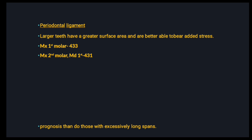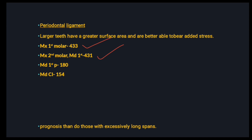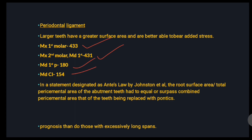You need to know the root surface area of certain teeth. The highest is for the maxillary first molar at 433 mm², followed by the maxillary second molar and mandibular first molar, both at 431 mm². The least value in the mandible is the mandibular first premolar at 180 mm², and the very least of all teeth is the mandibular central incisor at 154 mm².